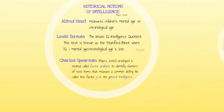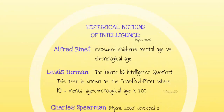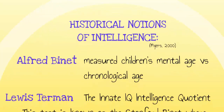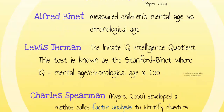Let's review the historical notions of intelligence. The modern intelligence testing movement began with the French government trying to predict school achievement. Alfred Binet measured children's mental age versus their chronological age. Lewis Terman spoke about the innate IQ, or intelligence quotient, and this test is known as the Stanford-Binet test, where IQ equals the mental age over the chronological age times 100. Today's intelligence tests produce a mental ability score based on the test taker's performance relative to the average performance of others the same age.